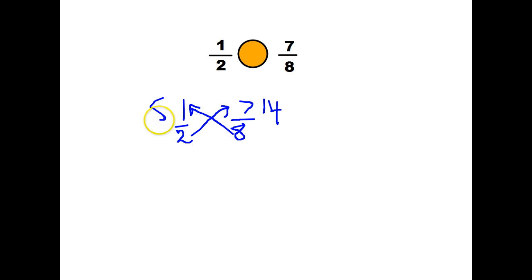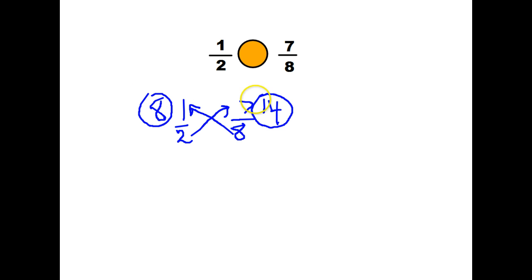So then you ask yourself: which is greater, 14 or 8? And that's fairly obvious — 14 is greater. So we know that 7 eighths is greater than 1 half.